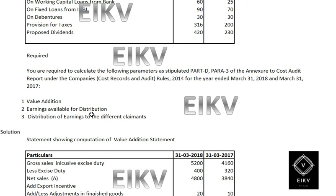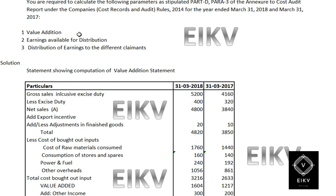The required information is to calculate the following parameters of the stipulated annexures of the cost audit report under the Companies Cost Records and Audit Rules 2014 for the year ended 31st March 2018. We need to compute value addition and earnings available for distribution.